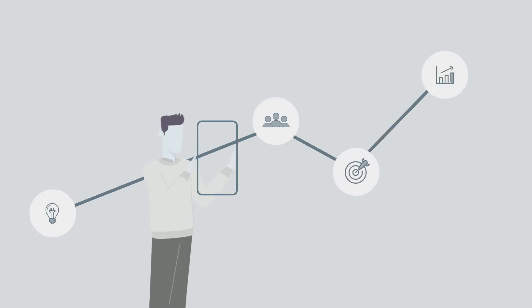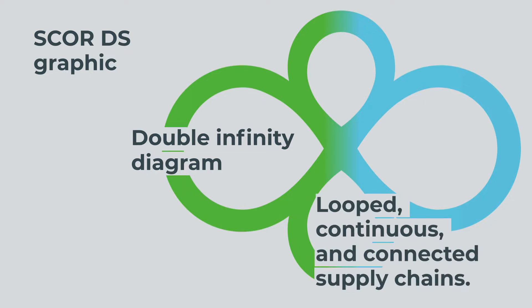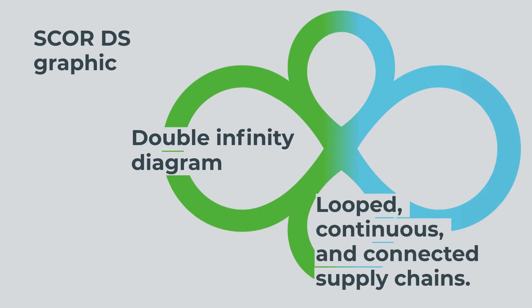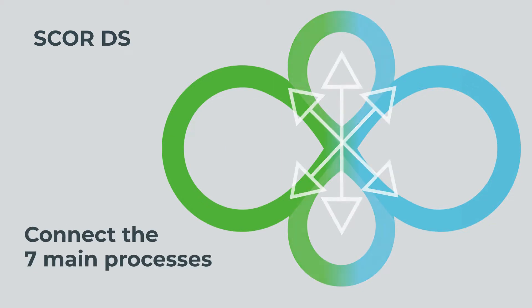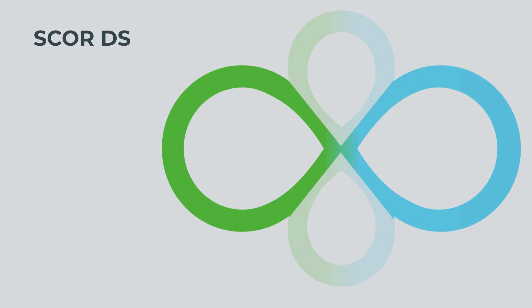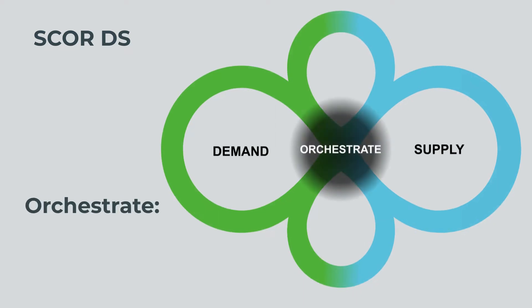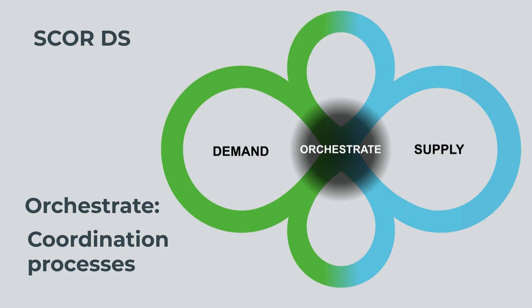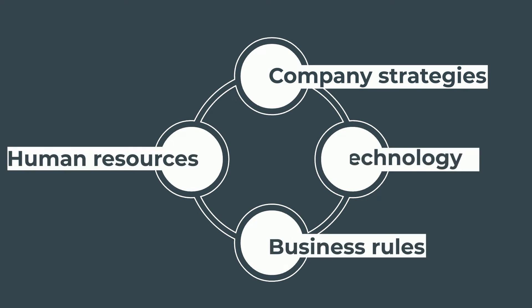I will explain the comprehensiveness of the SCOR DS model starting with the SCOR graphic. The SCOR DS graphic is a double infinity diagram representing today's looped, continuous, and connected supply chains. This diagram shows the connection between the seven main processes and groupings for supply chain processes. The horizontal infinity loop illustrates the balance to achieve between demand and supply. Demand on the left drives the supply of goods on the right. At the center of each supply chain is ORCHESTRATE, which represents all coordination processes that enable a supply chain to work effectively and align with company strategies, business rules, human resources, and technology.